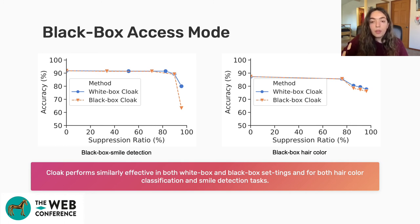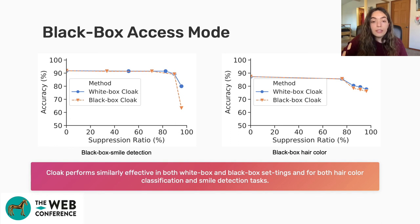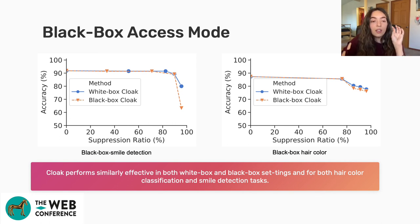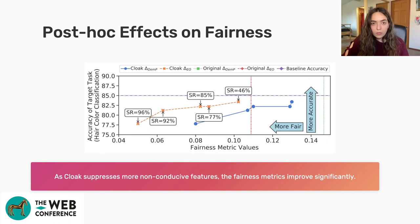We also evaluate Cloak under black-box access, a setup where the service provider is uncooperative and unwilling to provide model access. To tackle this, we use a surrogate model with a different architecture but trained for the same task, and apply Cloak on it. The performance is only slightly degraded: for smile detection and hair color detection, the orange line representing black-box mode shows only a small, negligible difference compared to the blue white-box access mode.